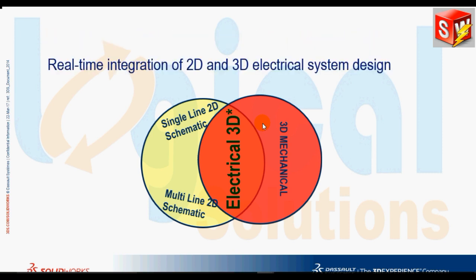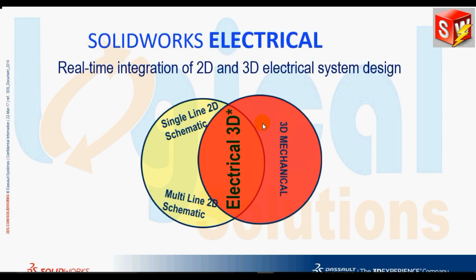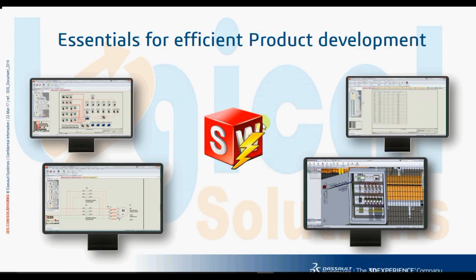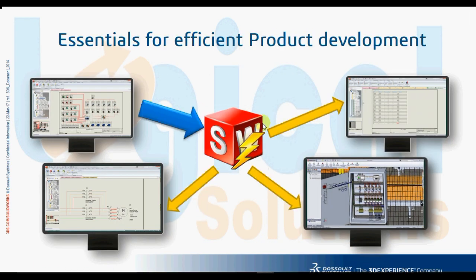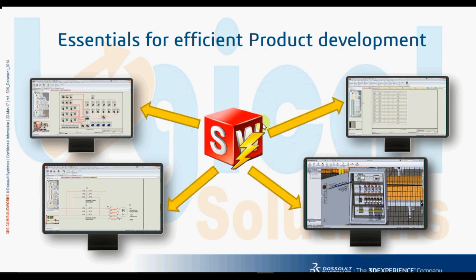Electrical system design convergence goes from logical to physical with synchronized electromechanical system design. As shown in the tutorial representation, we have single-line, multi-line, 3D panel with hardwiring, and bill of materials. The main theme is that by creating any two of them, we can automatically generate the remaining two because it is linked in real time and bi-directionally. Let us see a small video for 3D.